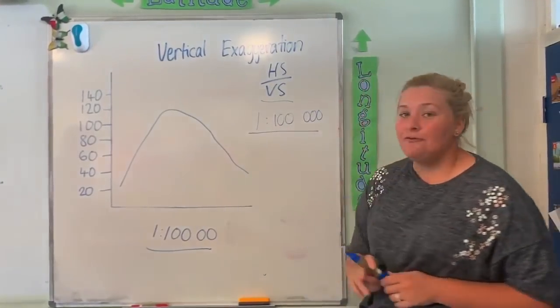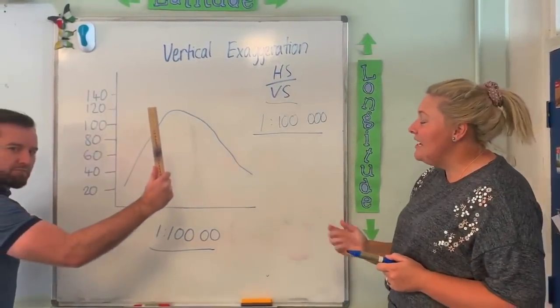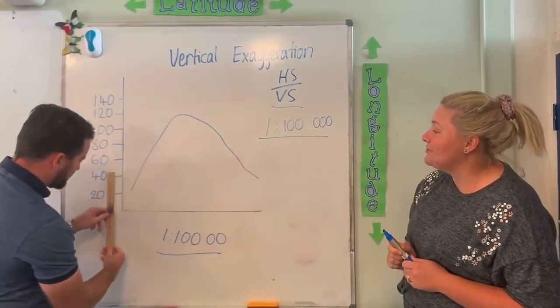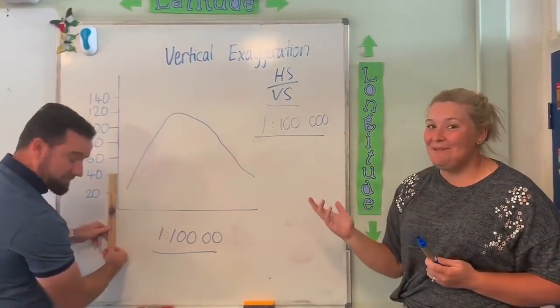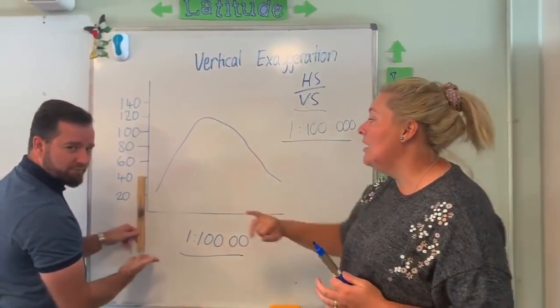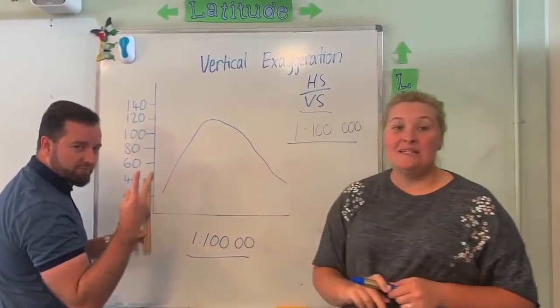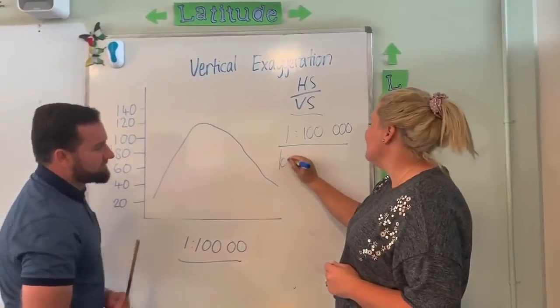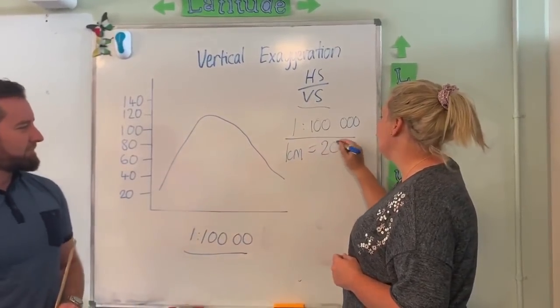What we're going to do next is have a look over here, we're going to get a ruler out. Thank you Mr. Cizio. And we're going to measure this vertical scale. Now obviously it's a bit bigger because it's a whiteboard, but we're going to imagine that 1 cm is equal to 20 m. So we're going to write that in here, that 1 cm is equal to 20 m.